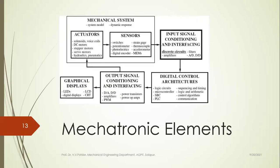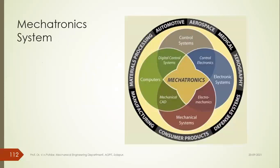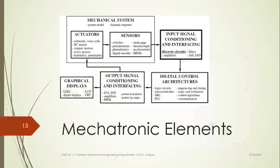If you look at a diagram of mechatronics, you'll understand how many branches are merged into mechatronics engineering. You have circles representing electronic systems, control engineering, mechanical systems, and computers — and the intersection of all four circles is the branch called mechatronics. Application areas include aerospace, medical, aerography, defense systems, consumer products, manufacturing, materials processing, and automotive.